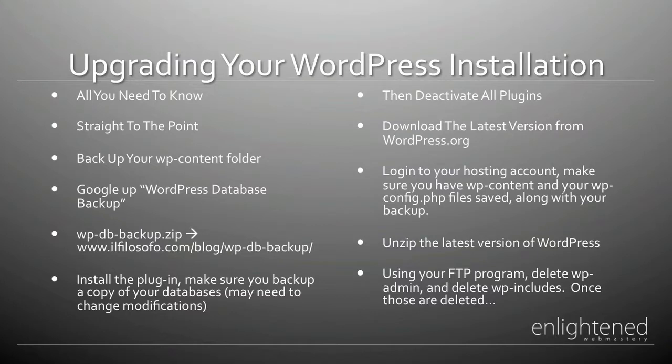After this is done, you now have backed up everything you need to back up — your wp-content folder and your actual database. The next thing you need to do is deactivate all your plugins. Then go to WordPress.org and download the latest version. Log in to your hosting account and make sure that you have wp-content and your wp-config.php file saved along with your database backup.